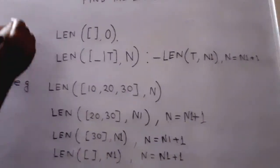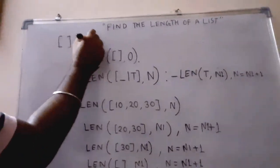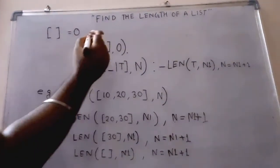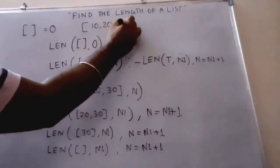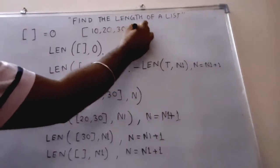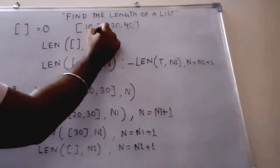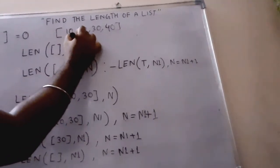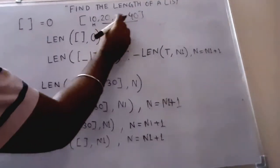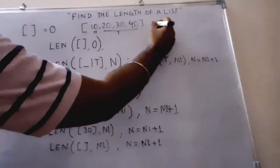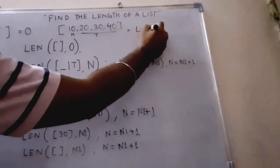We know the length of an empty list is zero. Now if I give you a list like [10,20,30,40], the length of the list is—this is the head part, and this is the tail part—the length of the tail plus one. So we can say length of the tail plus one.